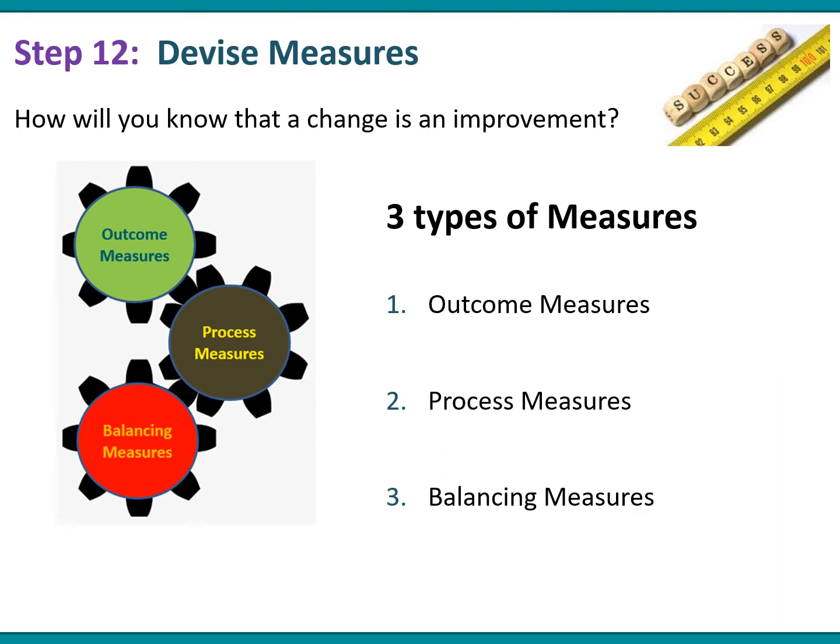Step number 12 is where you will devise your measures, as you need to consider how will you know that a change is an improvement. There are three types of measures that we'll cover in this section: outcome measures, process measures, and balancing measures.